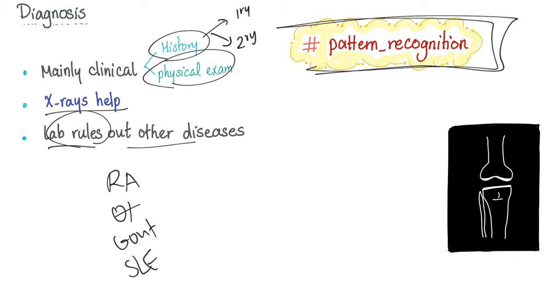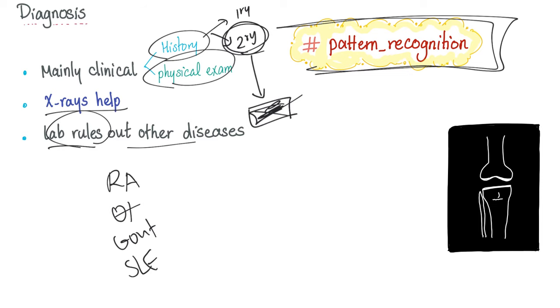Why does it matter? Because if it's secondary osteoarthritis, it's secondary to another problem — such as lupus, an injury, or something similar. You have to fix that underlying problem first before treating the osteoarthritis.